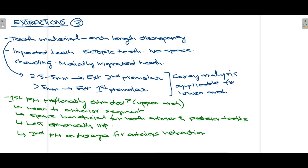The third method is extraction. Some teeth are extracted in order to gain space, and extractions are mostly performed when there is a tooth material–arch length discrepancy. Extractions are mainly indicated when there are impacted teeth, ectopic teeth, crowding with no space, and mesially migrated teeth. According to Carey's analysis, if crowding is 2.5 to 5 mm, the second premolar is extracted; if crowding is more than 5 mm, the first molar is extracted — applicable for the lower arch.